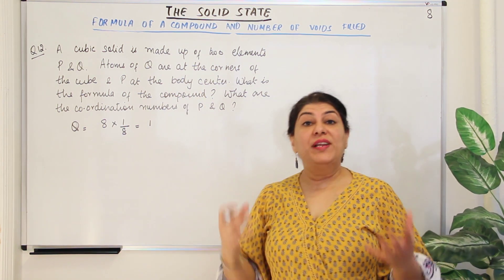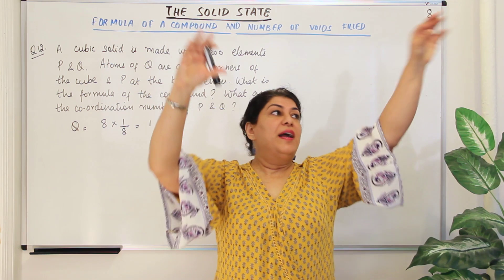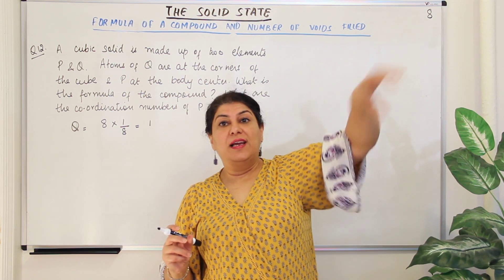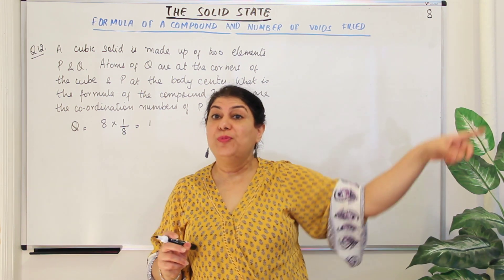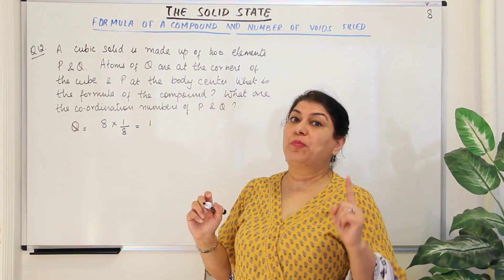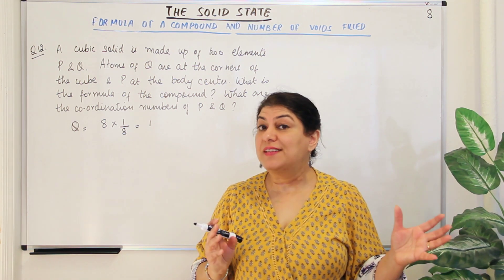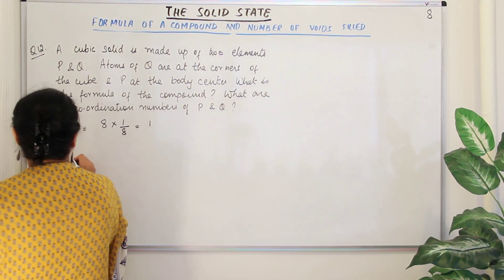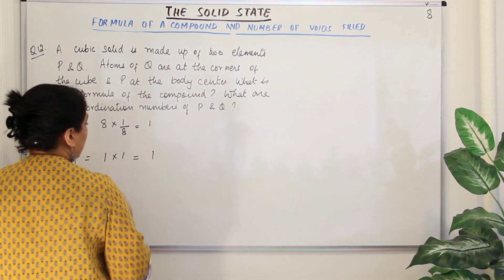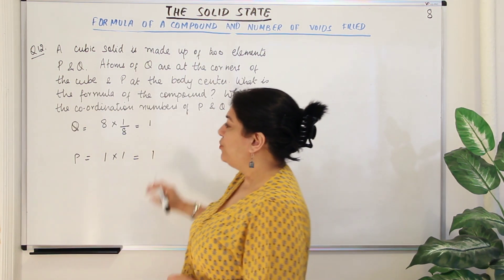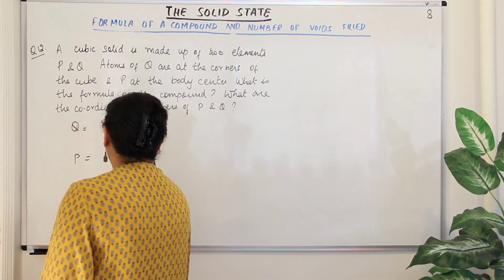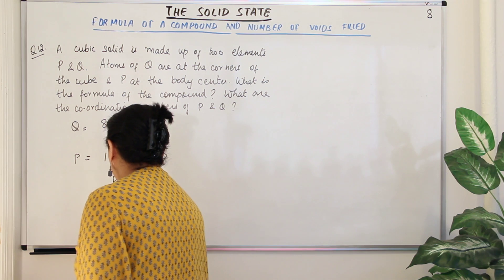P is present at the body centre. Anything at the body centre belongs completely to that unit cell, so its contribution is 1. Therefore the ratio of P to Q is 1:1 and the formula of the compound is PQ.